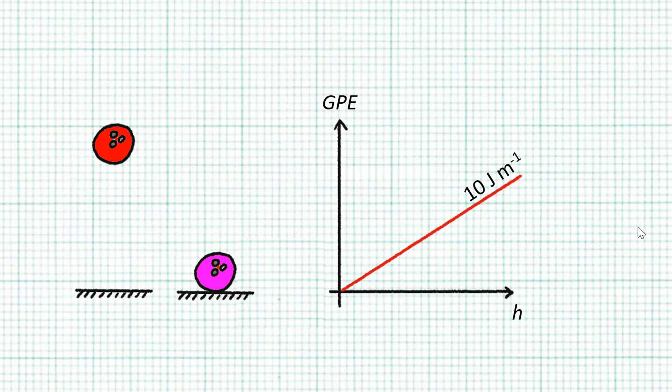Say I lift a ball and its GPE went up by 10 joules every one meter. And I lift another ball and its GPE went up at a rate of 20 joules per meter. Which ball is heavier?